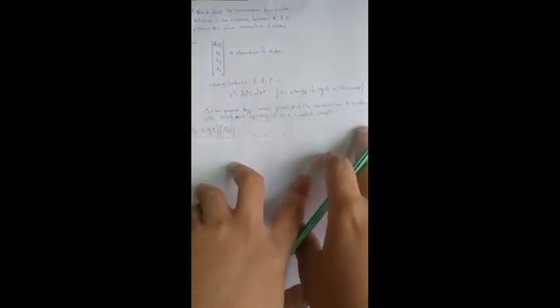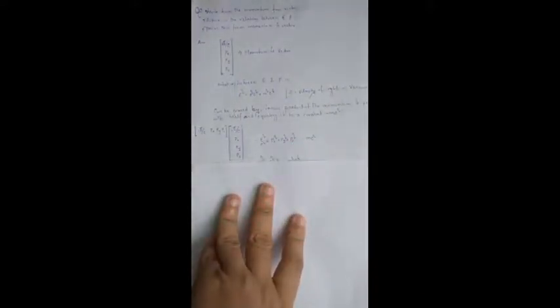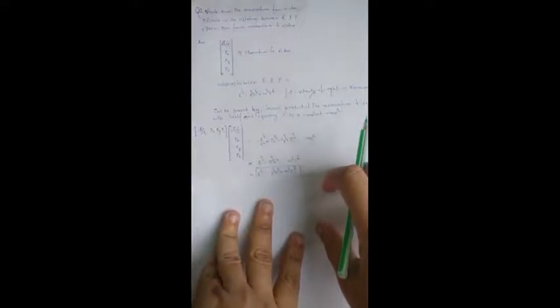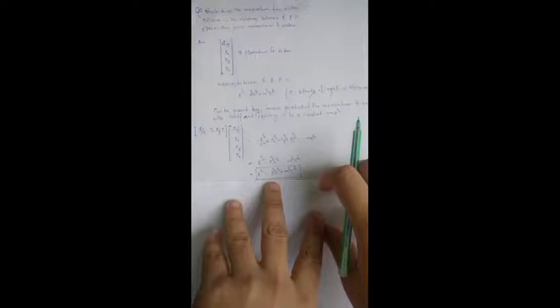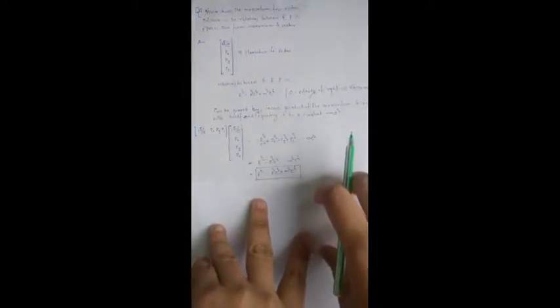On that situation, we will get something like this and if we just do the inner product, we will get the relation minus E squared by c squared plus Px squared plus Py squared plus Pz squared equals minus Mc squared. And from that, we will be able to show this relation E squared equals P squared c squared plus M squared c to the power 4.